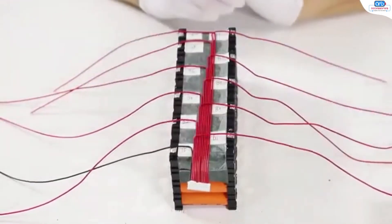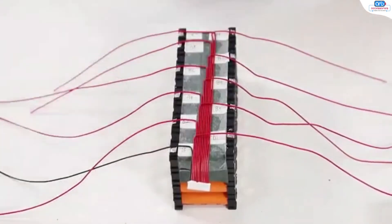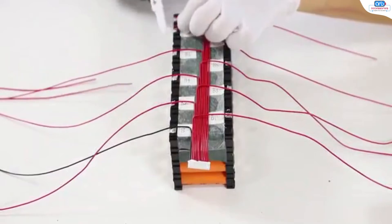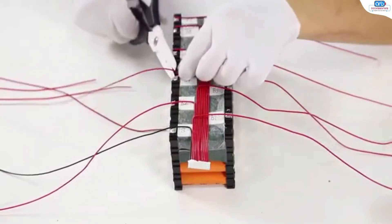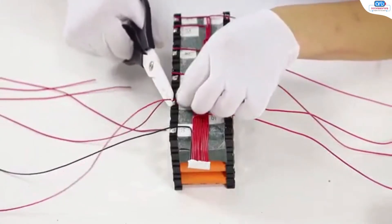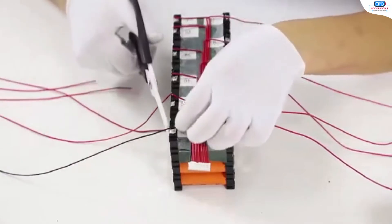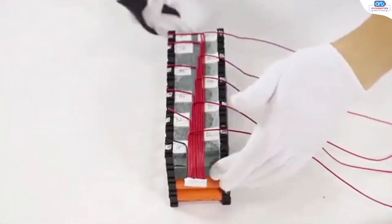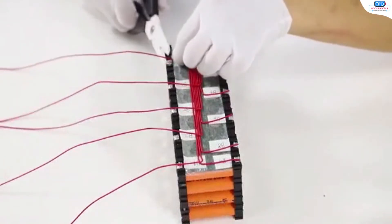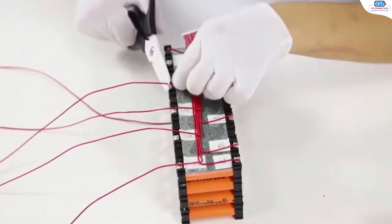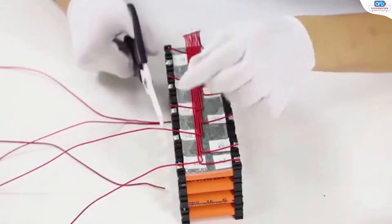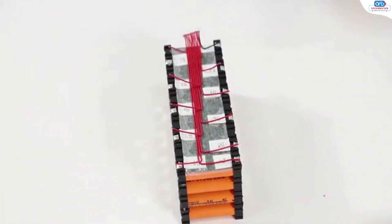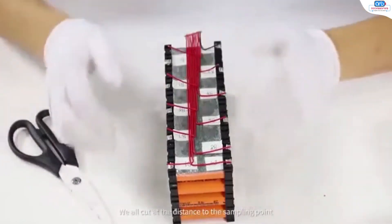After the sampling line is in place, we will cut the sampling line. We can cut the length better, this line. We all cut at the distance to the sampling point.